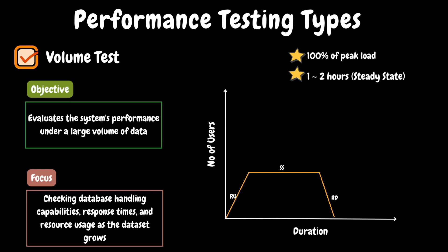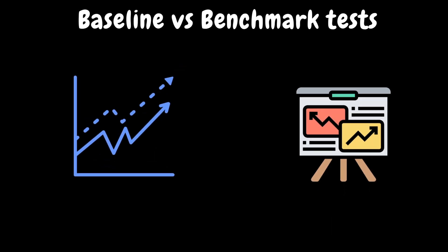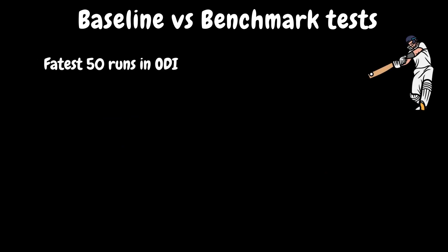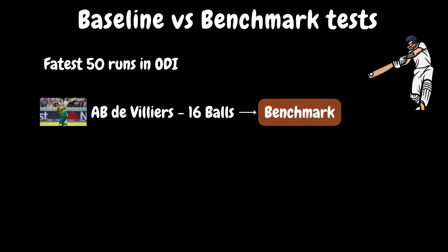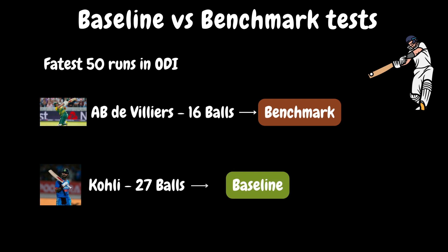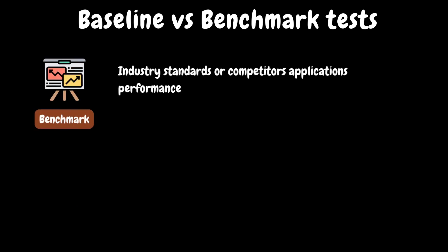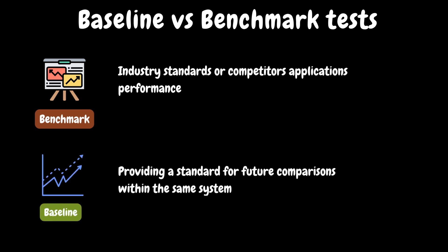Next, we will understand the concept of baseline test and benchmark test — one of the commonly asked interview questions. To understand the concept, let's take cricket as an example. A.B. de Villiers has scored 50 runs in just 16 balls — this is the fastest 50 record and sets a benchmark for the rest of the batsmen in the world. If anyone breaks this record, that would be the new benchmark. Virat Kohli scored 50 runs in 27 balls — this can be considered Kohli's baseline. If Kohli scored 50 in just 25 balls tomorrow, that would be his new baseline. Likewise, benchmarks represent industry standards or the performance of competitors' applications, while the baseline is a standard provided for future comparisons within the same system.